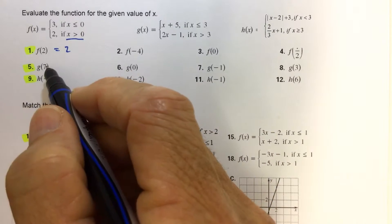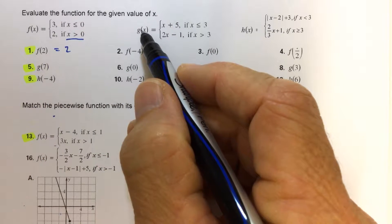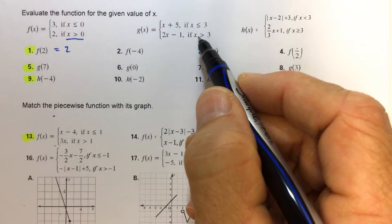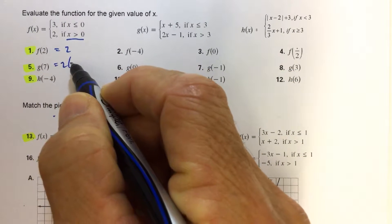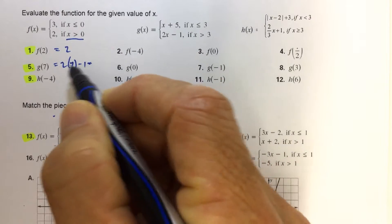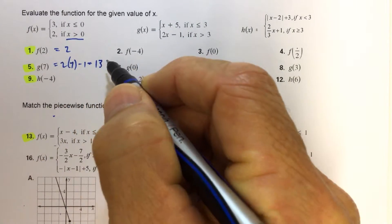And then g of 7, we find function g, this is the rule. g of 7, 7 is greater than 3, so we want to write 2 times 7 minus 1. 2 times 7 is 14, 14 minus 1 is 13.